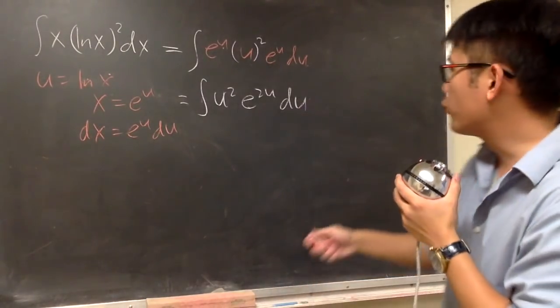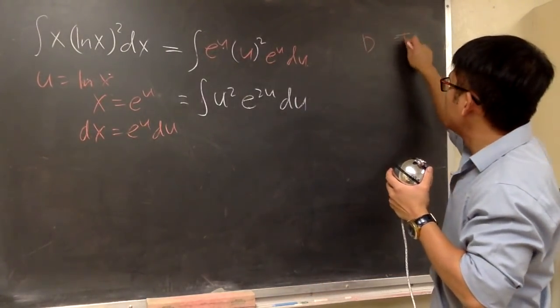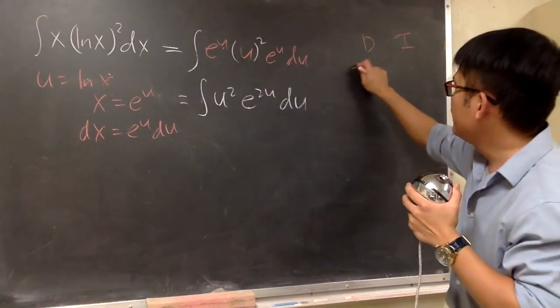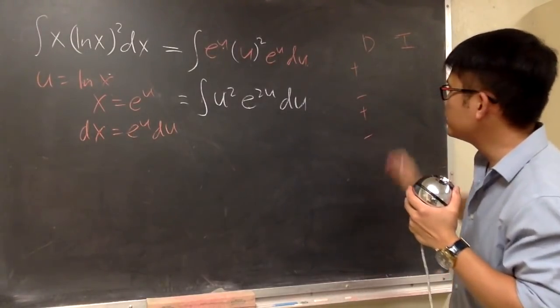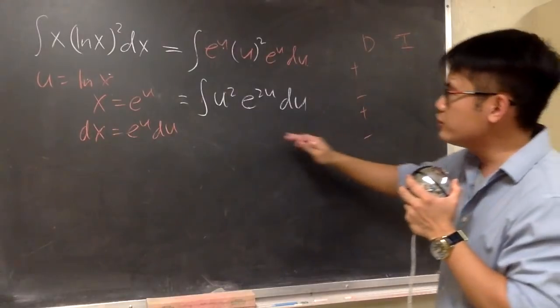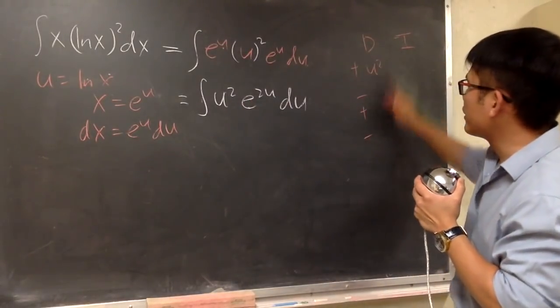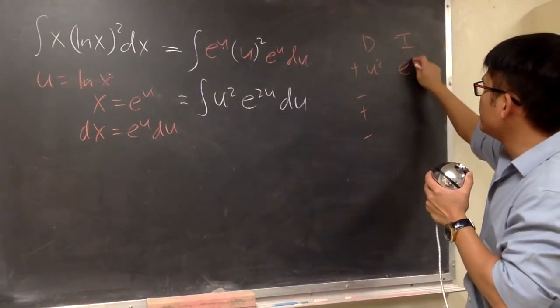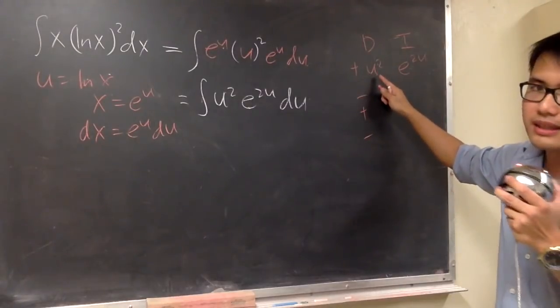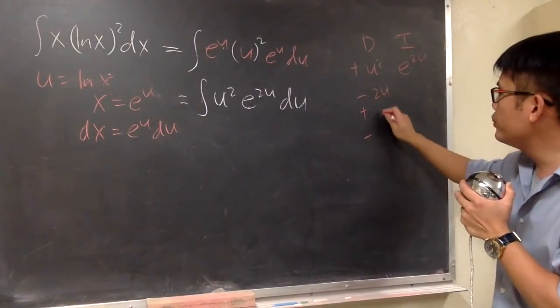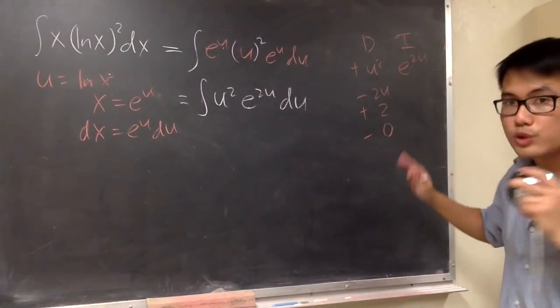We have to use integration by parts. Of course, we will do it with the DI method. So you guess you're not a deal, right? If you guys don't, please check the video in the description. I'm going to differentiate u squared. So let's put that down right here. And I'll integrate e to the 2u. So look at this and differentiate that. We first get 2u and then we get 2 and then we get 0. So we can stop.